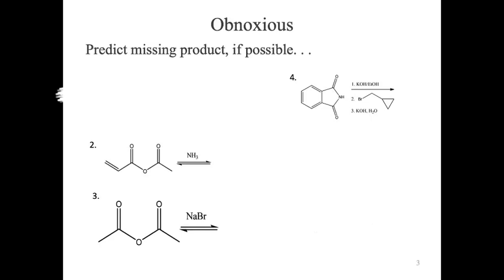Let's look at problem four. One brave volunteer noted right away that we have KOH, which is a strong base, and noted the hydrogen is acidic. Is the nitrogen-hydrogen typically acidic? No — but it's acidic now because there's a lot of resonance stabilization in that structure. That was a fantastic first step — deprotonated.